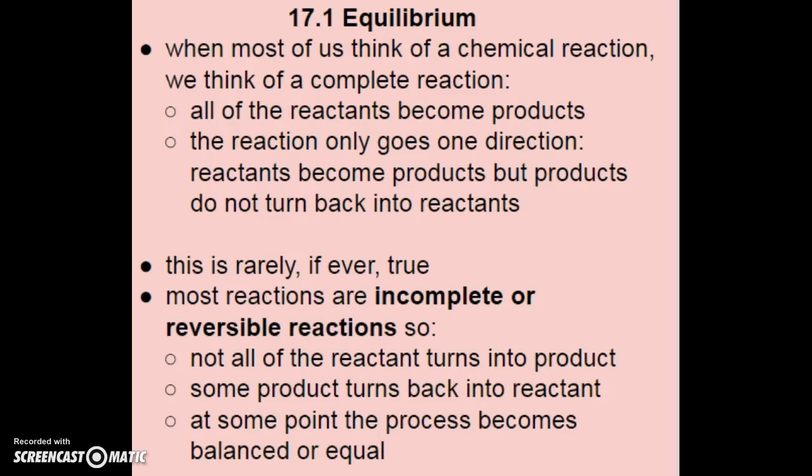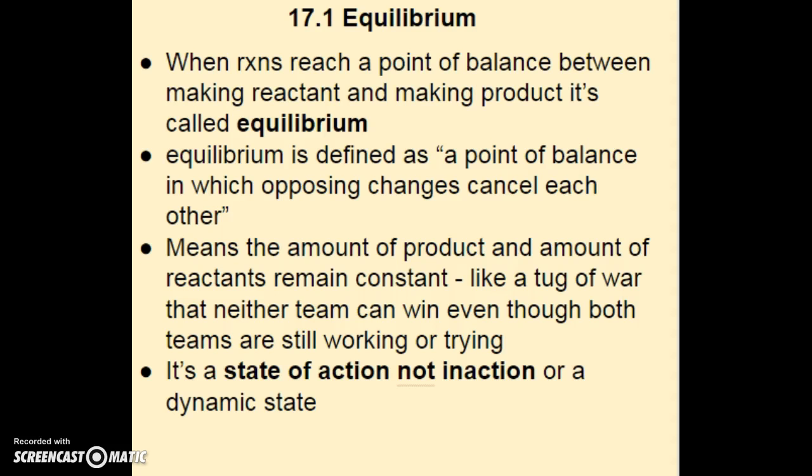Welcome to the screencast for chapter 71, which introduces the idea of equilibrium. When most of us think of a chemical reaction, we think of a complete reaction where all reactants become products and the reaction only goes one direction. The reality is that most reactions are actually incomplete or reversible, meaning some product turns back into reactant. At some point, the process becomes balanced between the forward and reverse reaction — this is called equilibrium.